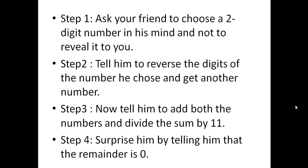Step two: tell him to reverse the digits — ones place goes to tens place and tens place goes to ones place — to get another number. Step three: tell him to add both numbers and divide the sum by 11. Surprise him by telling him that the remainder is zero, whatever number he chose.